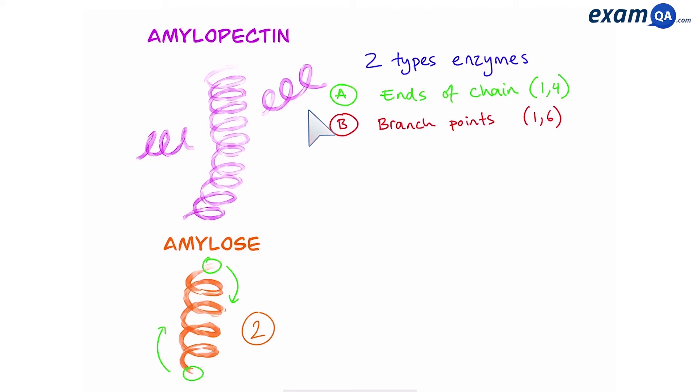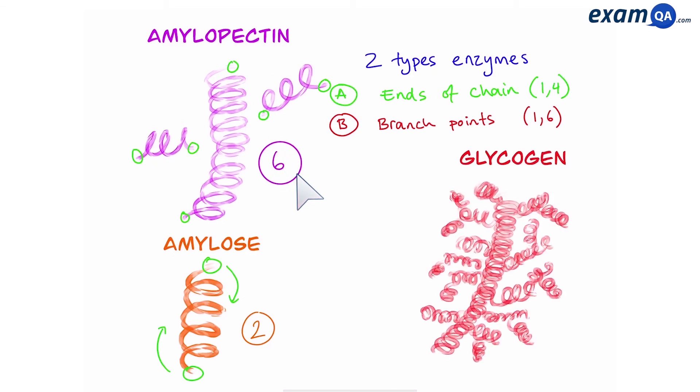So as we can see amylose which had no branches is still going to have two enzymes working on it. However this time because the branches were broken off amylopectin we can have six enzymes working on it. So glycogen is simply amylopectin but way more branched, so that means because there are more branches it's going to be hydrolyzed faster.